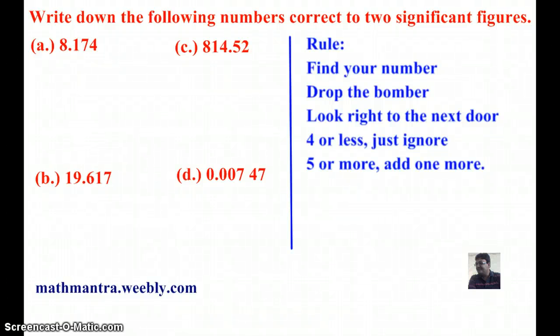In this session, we are going to learn how to rewrite a number or round off a number correct to two significant figures. Let's start with our first example, 8.174.